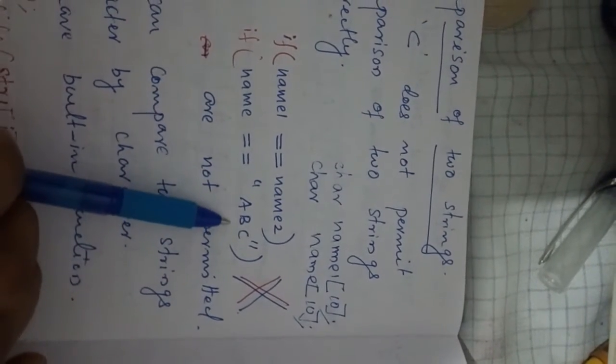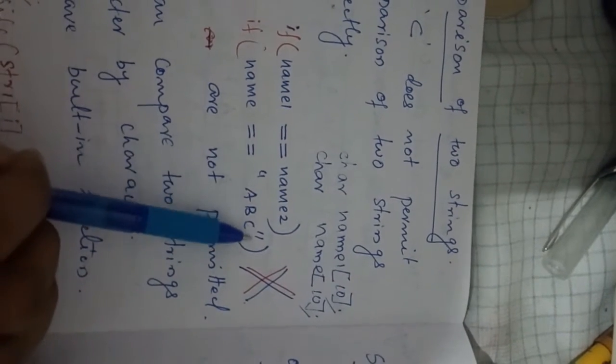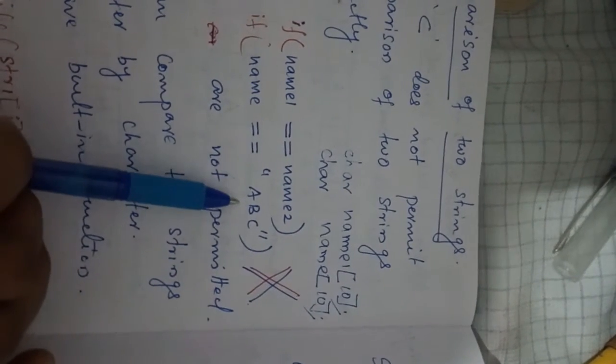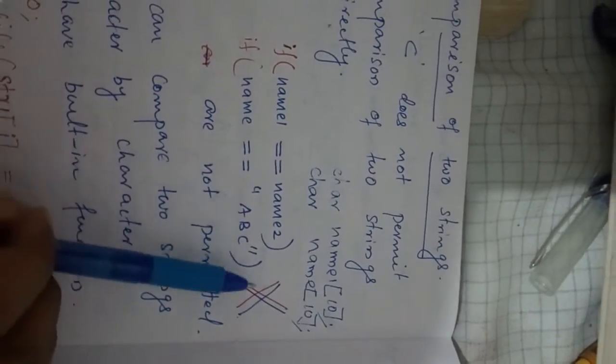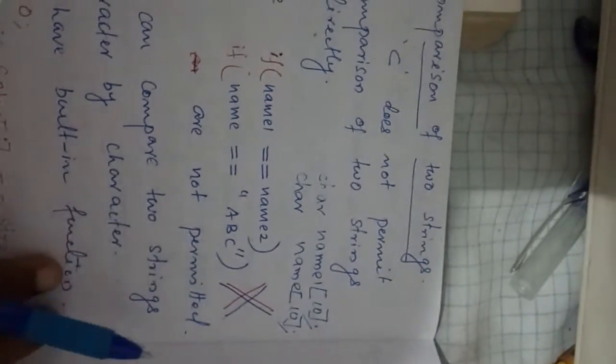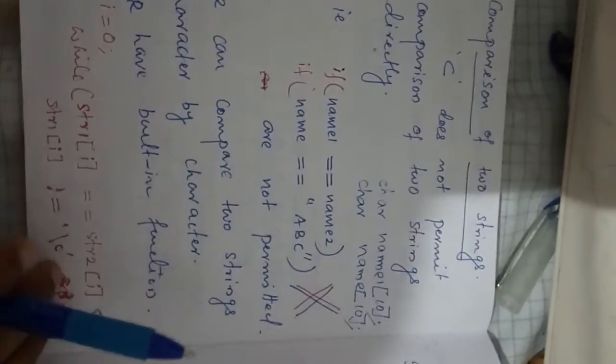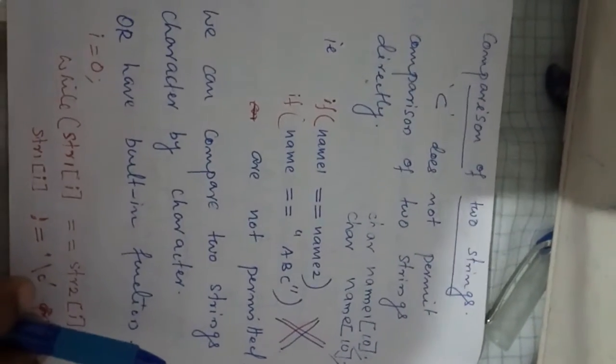Two string variables cannot be compared directly using the equal operator. A string variable and a string constant — what we represent in double quotes is known as a string constant — direct comparison is not allowed, it is not permitted in C. So how can we compare them?